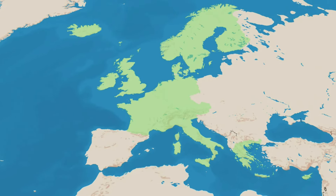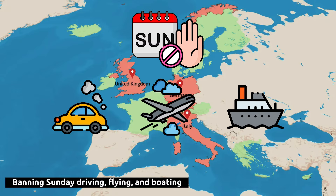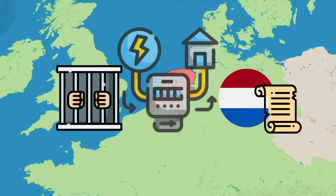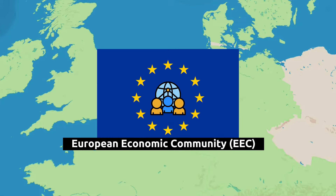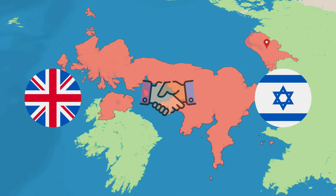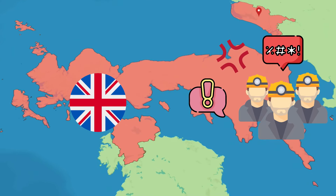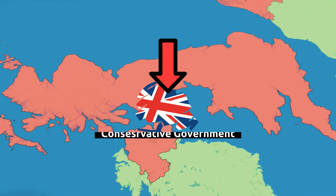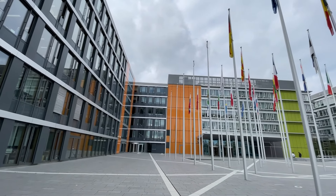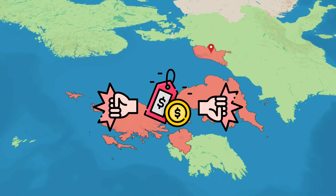Western Europe was impacted differently by the oil embargo. The U.K., Germany, Italy, Switzerland, and Norway banned Sunday driving, flying, and boating, while Sweden rationed gasoline and heating oil. The Netherlands imposed prison sentences for those who exceeded their electricity ration. The U.K., despite being an ally of Israel, faced little direct effect from the embargo but experienced an energy crisis due to strikes by coal miners and railroad workers, which became a major factor in the defeat of the Conservative government in the 1974 general elections. The EEC later issued a pro-Arab statement, and OPEC lifted its embargo from all EEC members, though price rises had a much greater impact on Europe than the embargo itself.